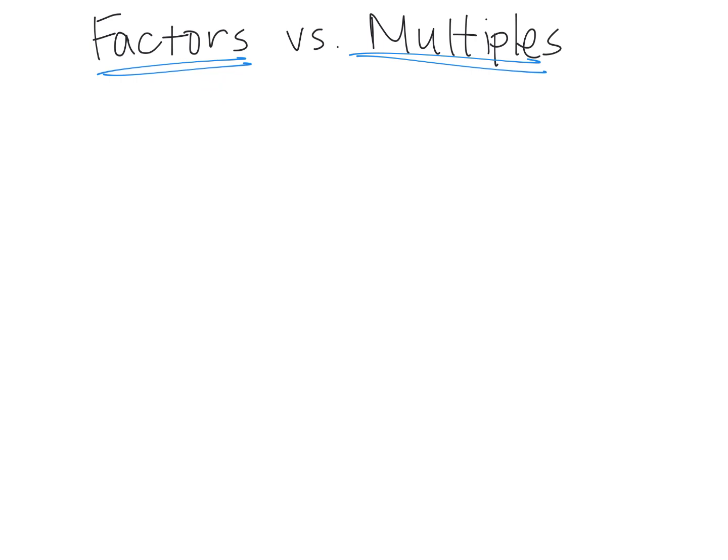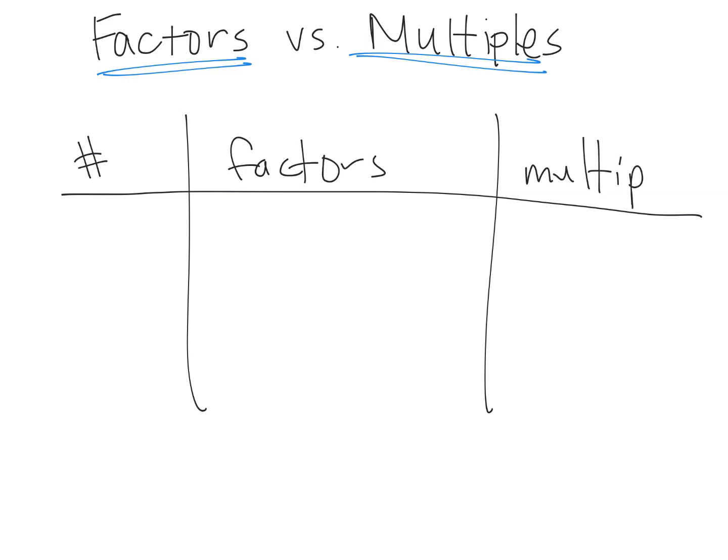So the idea would be to make a three-column chart. And here is our number, here are our factors, and here are our multiples. And you can give a number, for example, four. So what are the factors of four? That would be 1, 2, and 4.